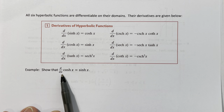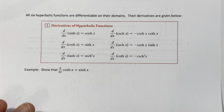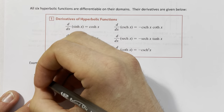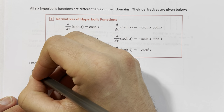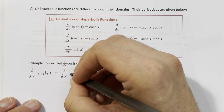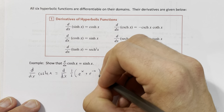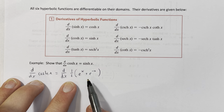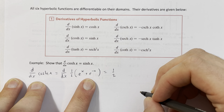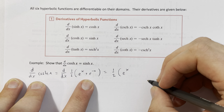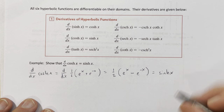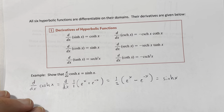Let's derive the derivative of cosh. We don't need the limit definition — we convert cosh to its exponential form and differentiate. d/dx of cosh of x equals d/dx of one-half times the quantity e to the x plus e to the negative x. The one-half stays as a constant multiple. The derivative of e to the x is e to the x; the derivative of e to the negative x by the chain rule is negative e to the negative x. This gives one-half times e to the x minus e to the negative x, which is exactly sinh of x.